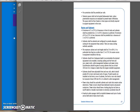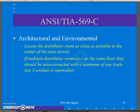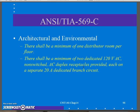Locate the distributed room as close as possible to the center of the area being served — we mentioned that before — as close to the center of the floor as possible to get maximum coverage. If multiple distributed rooms are on the same floor, they should be interconnected with specified conduit so I can run backbones between my closets. There should be a minimum of one closet per floor in the building.